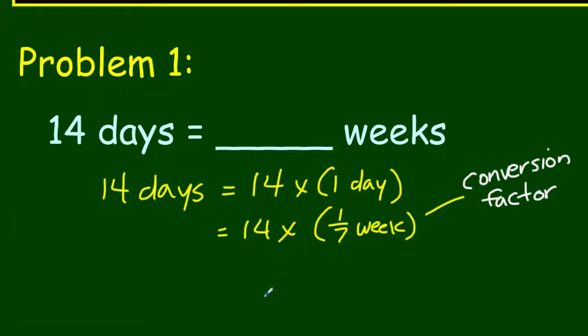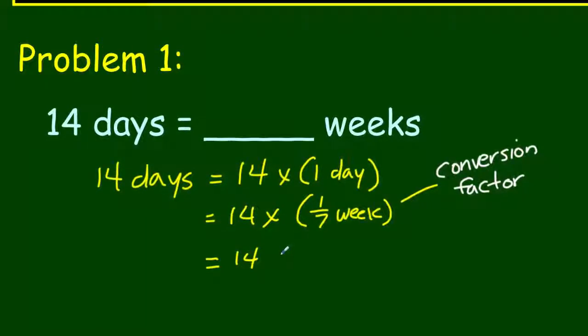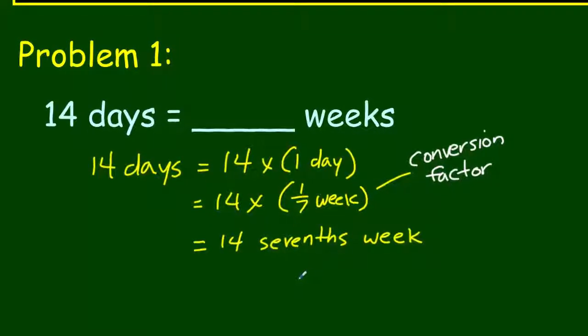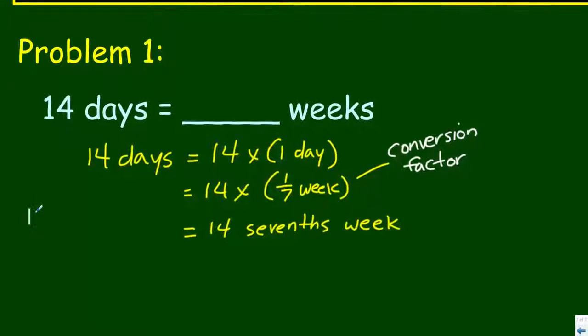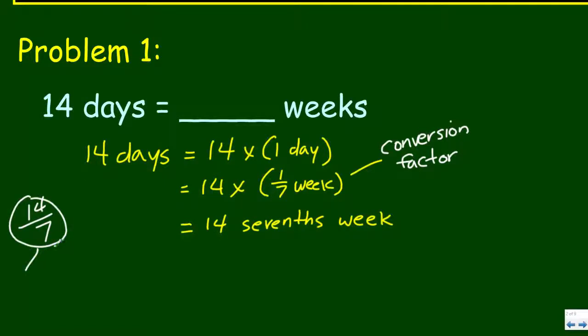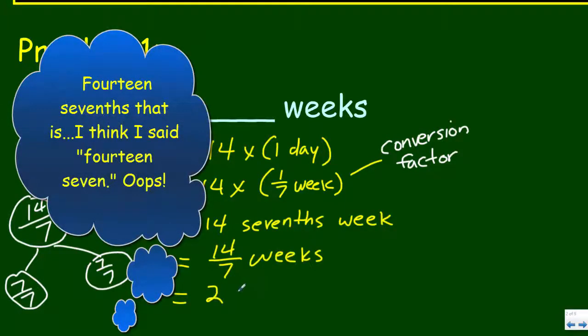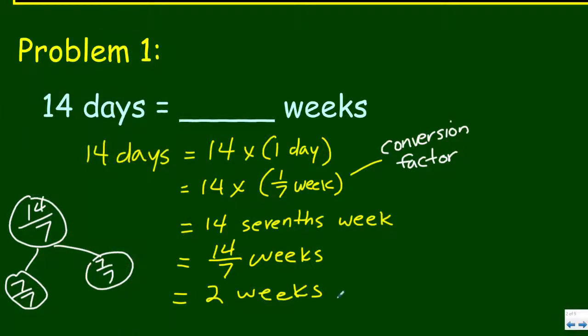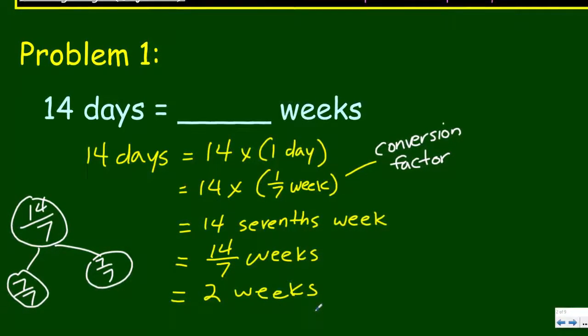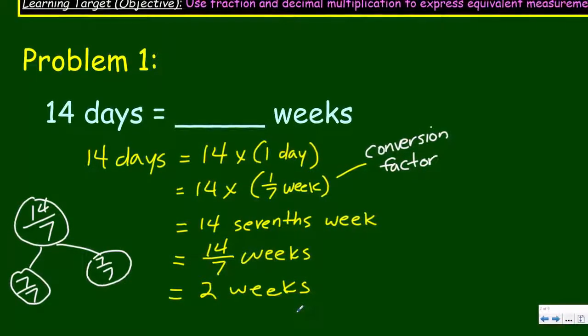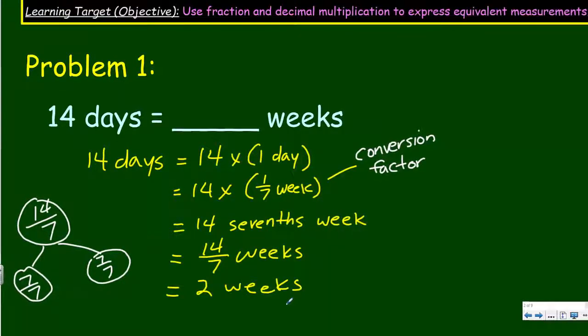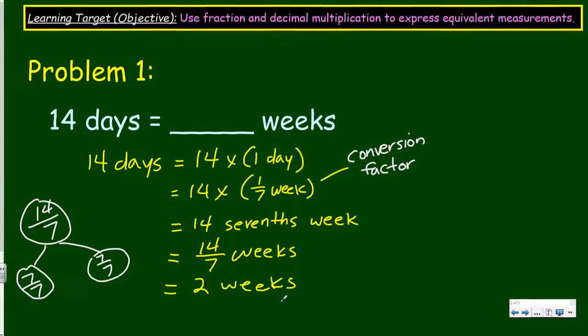By using these parentheses, it makes it clear that this is a conversion factor, because it's allowing us to make this conversion. It has the same value though. One-seventh week is the same as one day. What's 14 times one-seventh week? Wouldn't that just be 14-sevenths week? That would be 7 over 7 and 7 over 7, which gives us our 14-sevenths. What is 14-sevenths weeks? It'd be just two weeks. We have 14 divided by 7. We went from a smaller unit to a larger unit, days to weeks, so we needed to divide.